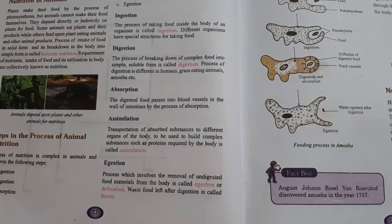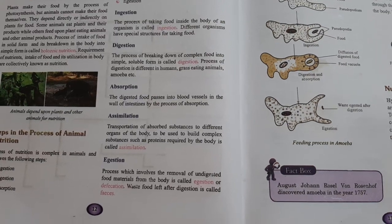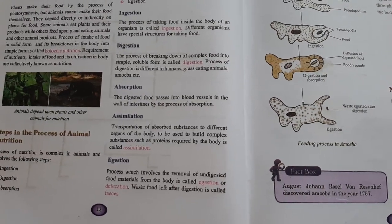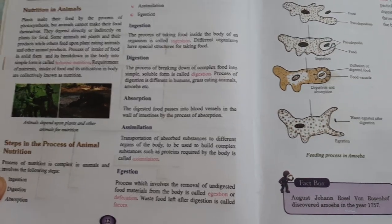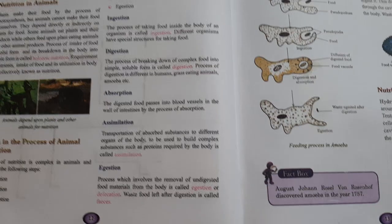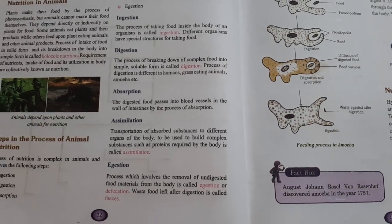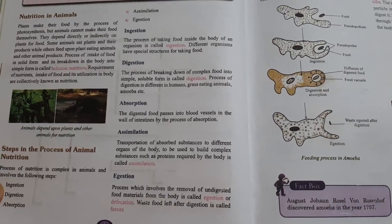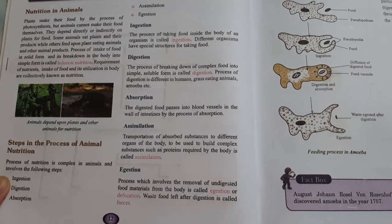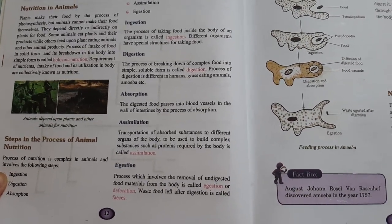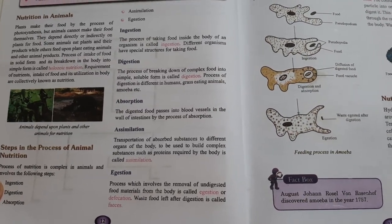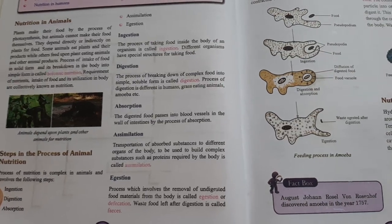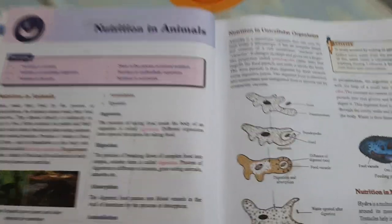Assimilation is the transportation of absorbed substances to different organs of the body to be used to build complex substances such as proteins. The last step is egestion, which involves the removal of undigested food material from the body, also known as defecation. The waste food left after digestion is known as faeces.